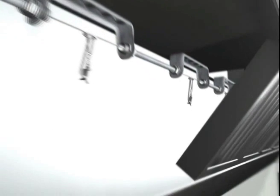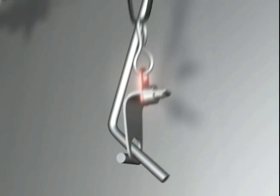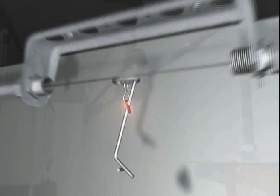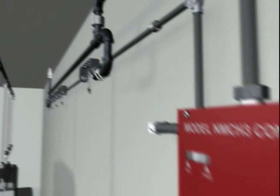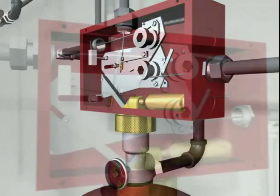When the temperature rating of the fusible link is reached, it separates, releasing tension on the wire connected to the mechanical control head located remotely or on the pressurized agent tank. This action initiates electric power shutdown and the mechanical control head releases tension to a separate wire.